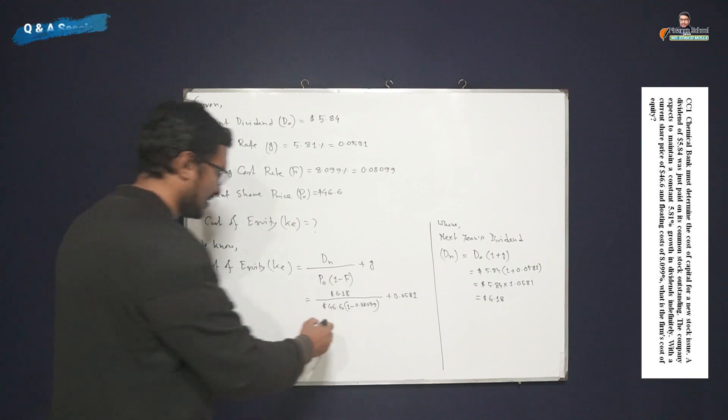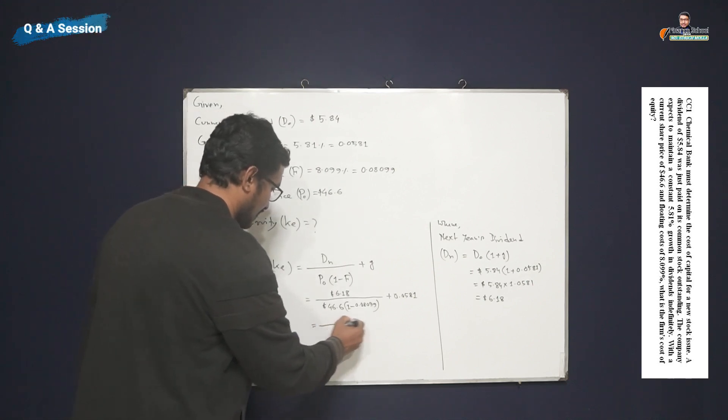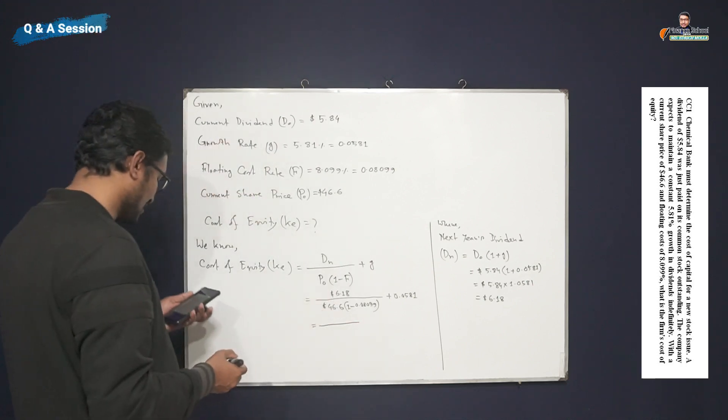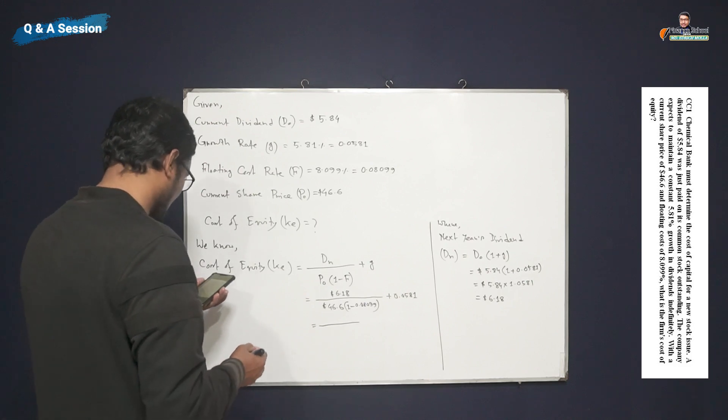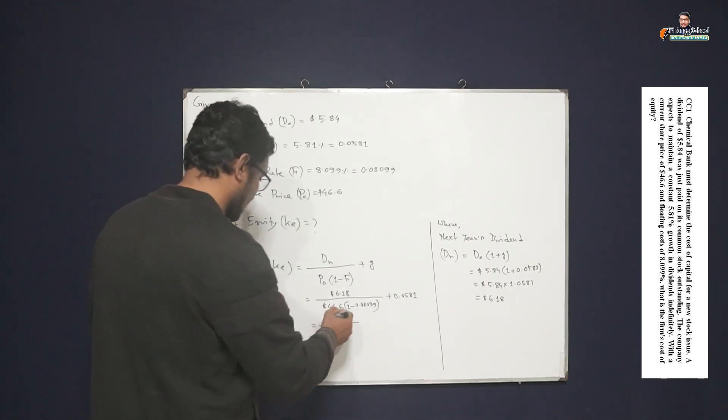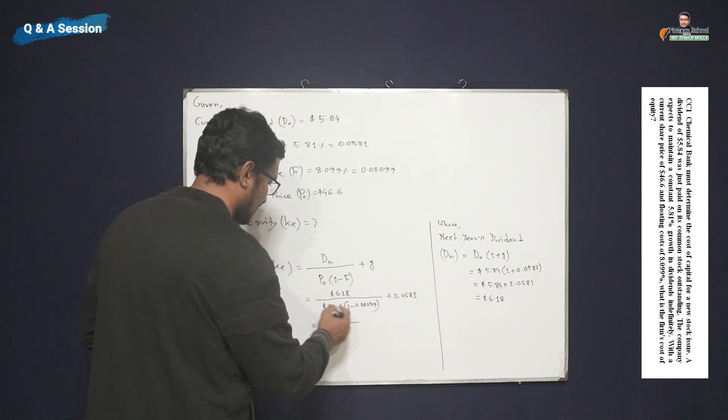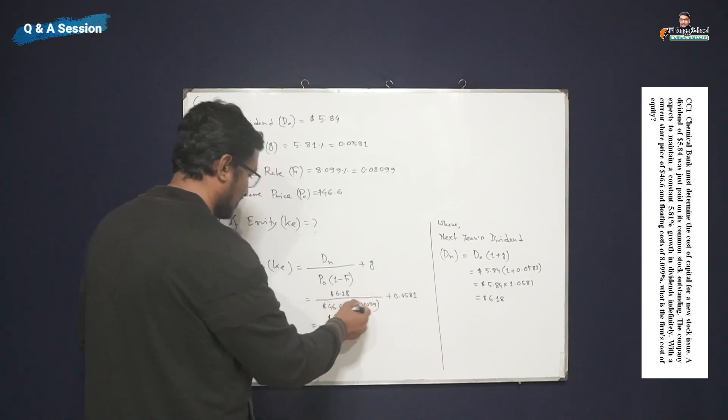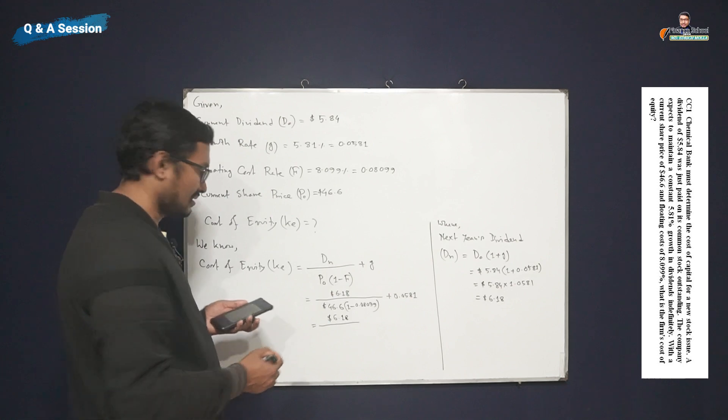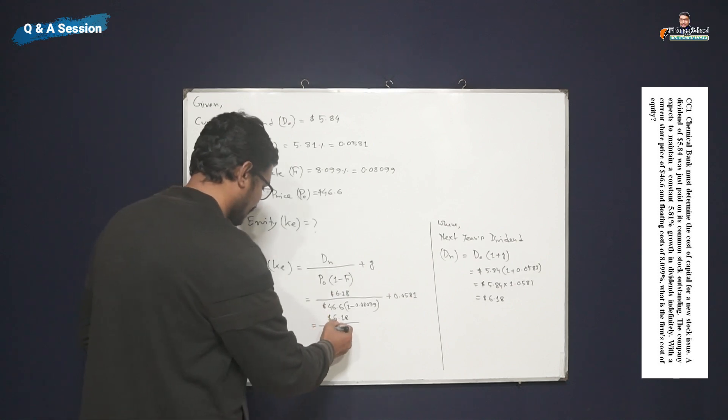Now it's time to compute using our calculator. Therefore we can write here 6.18. If we compute this portion, I mean denominator, then we can write 42.83.